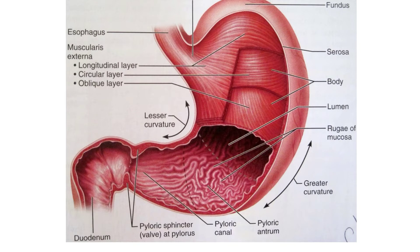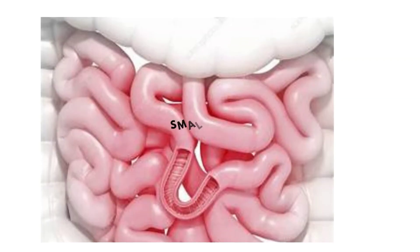In the stomach, there is a gland known as the gastric mucosa, which secretes HCl (hydrochloric acid) and pepsinogen. When pepsinogen comes in contact with hydrochloric acid, it changes to pepsin. Pepsin then converts protein to peptones. This is why we say that digestion of protein starts from the stomach.